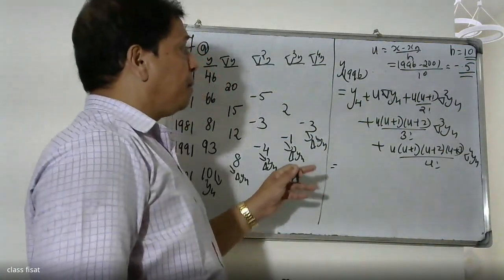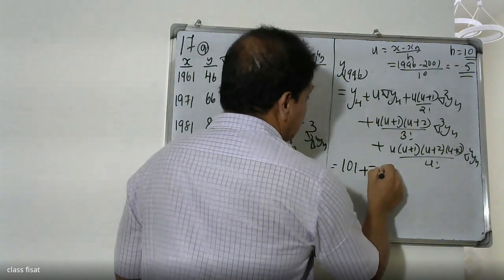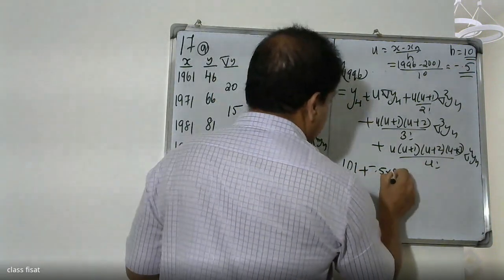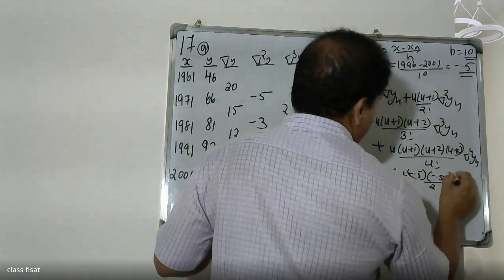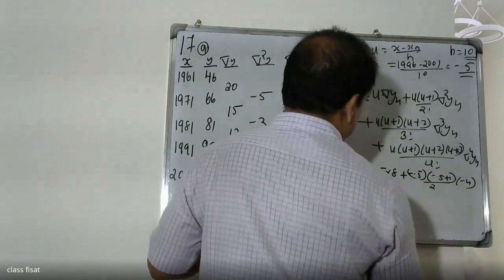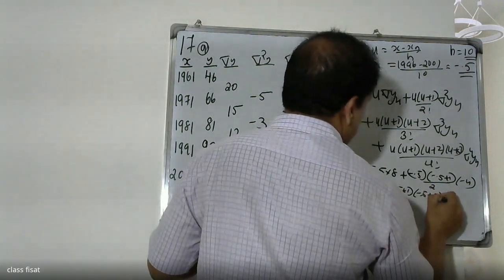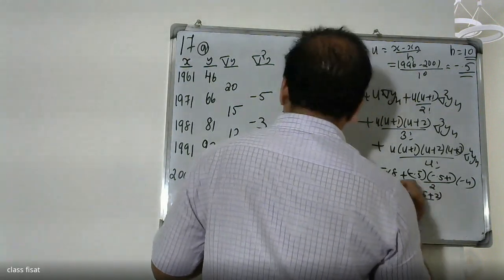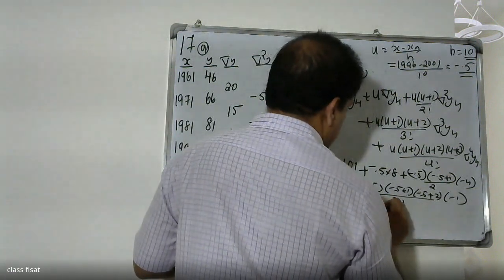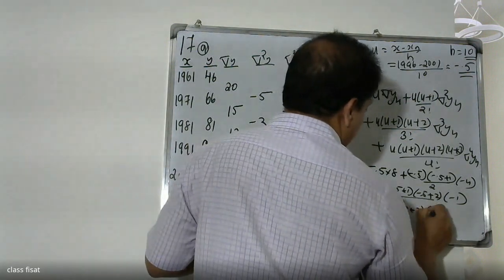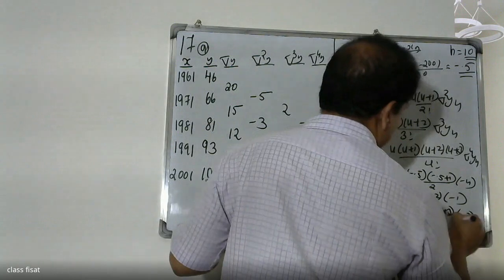Now substituting the values: y = y₄ + (-0.5)·Δy₄ + [(-0.5)(0.5)/2]·Δ²y₄ + [(-0.5)(0.5)(1.5)/3!]·Δ³y₄ + [(-0.5)(0.5)(1.5)(2.5)/4!]·Δ⁴y₄.